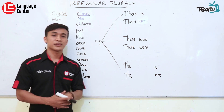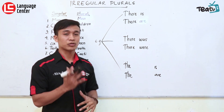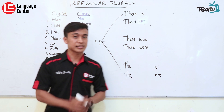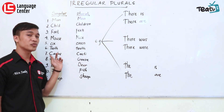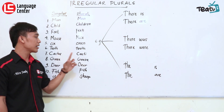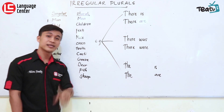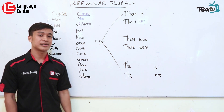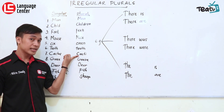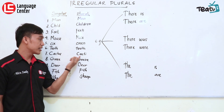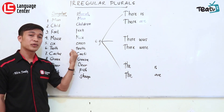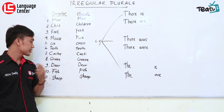Nomor tujuh adalah 'cactus'. Kalau tunggal disebut 'cactus'. Kalau lebih dari satu, disebut 'cacti'. Mungkin ini jarang terdengar, tapi dia adalah bentuk plural dari 'cactus'.